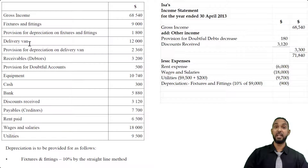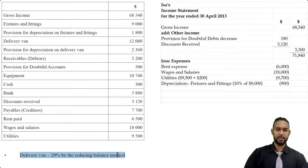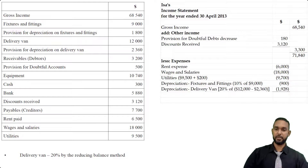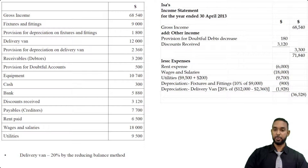For the delivery van, the notes say 20% by the reducing balance method, so we multiply 20% by the net book value. Net book value equals cost of $12,000 minus the existing provision for depreciation of $2,360, giving $9,640. Then 20% of $9,640 = $1,928. That concludes the expenses section. Total expenses, when added together, come to $36,528. Subtracting from $71,840 gives us a net income figure of $35,312.